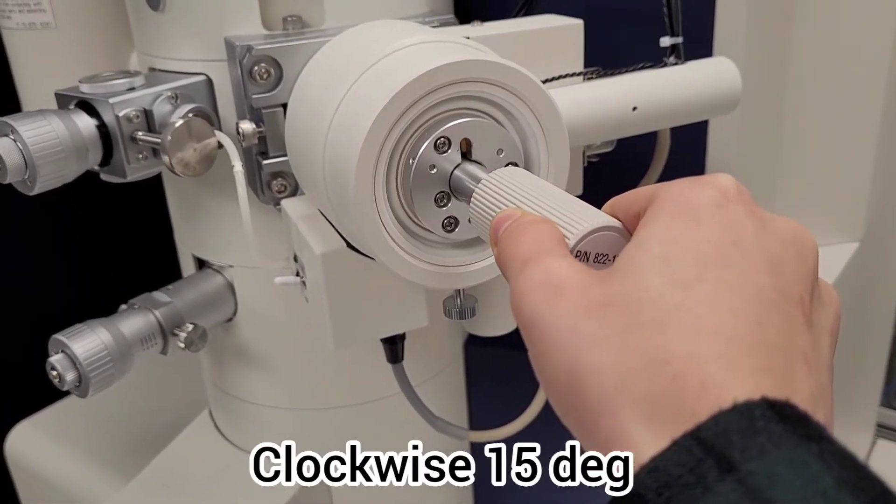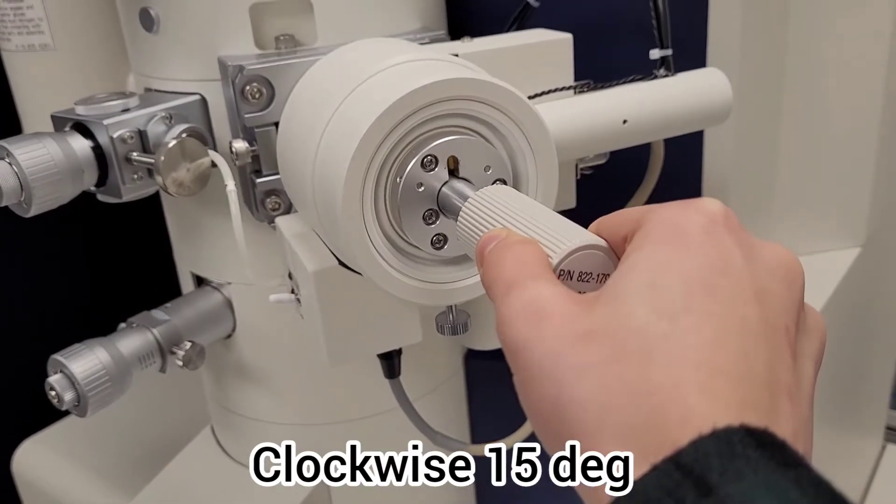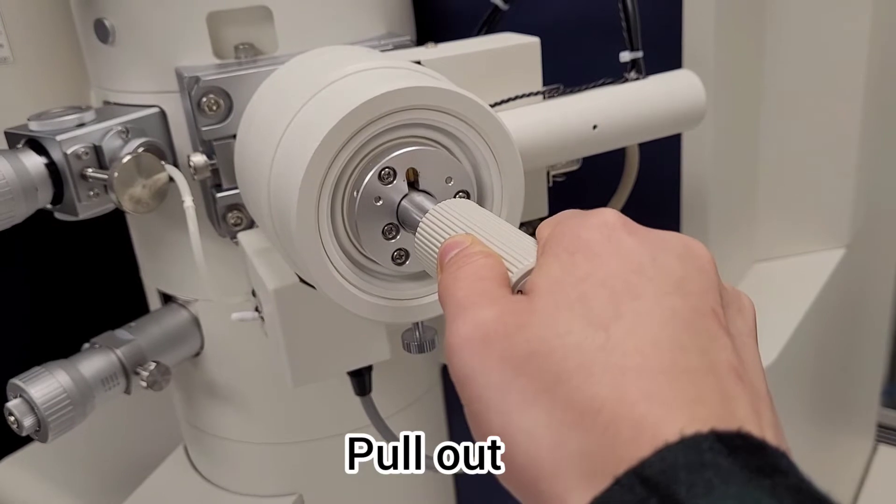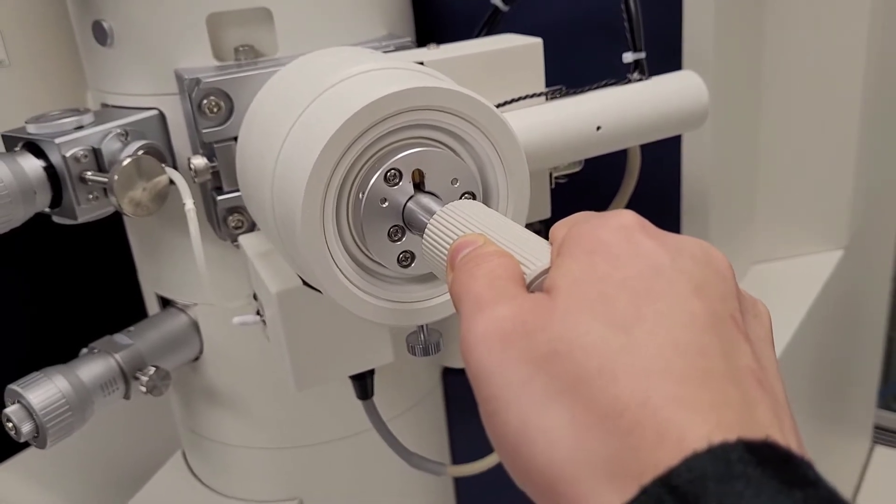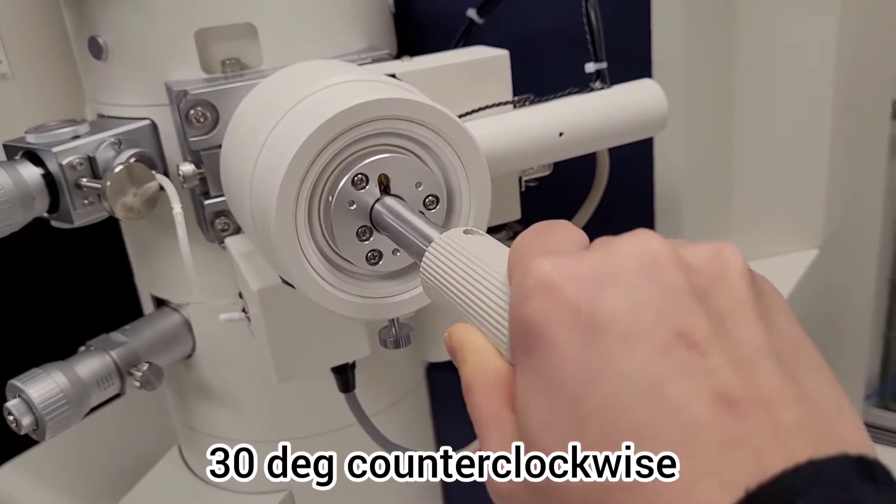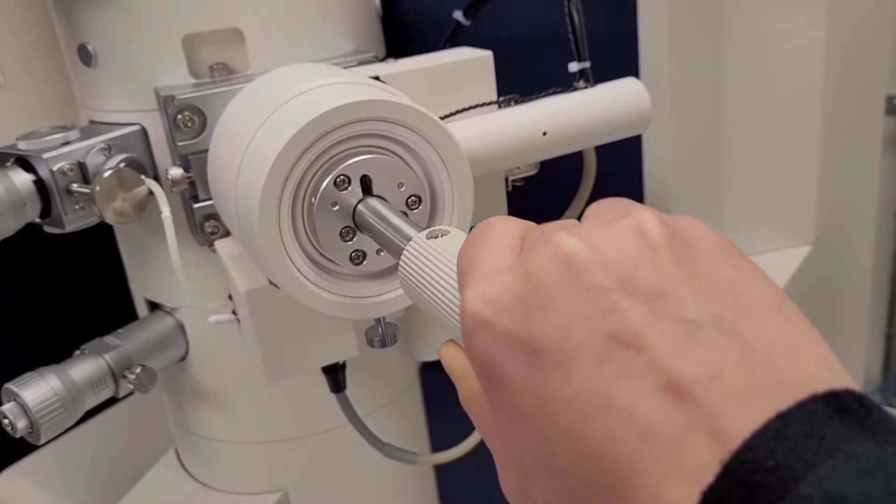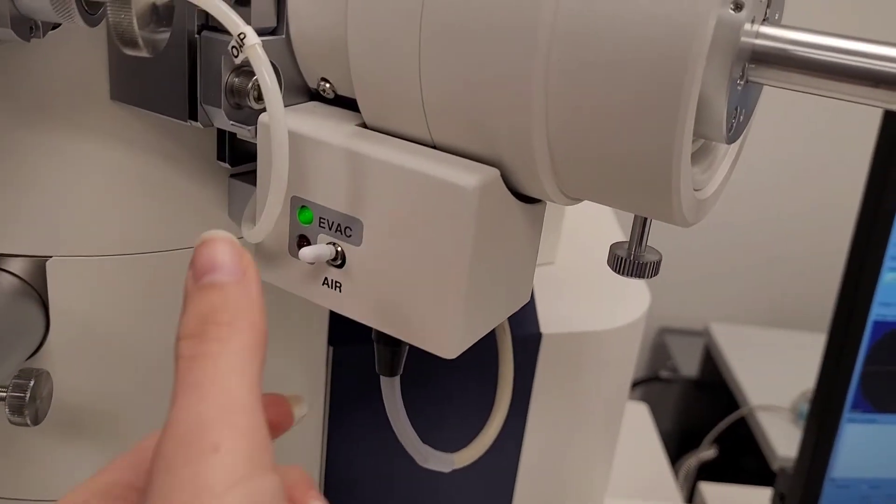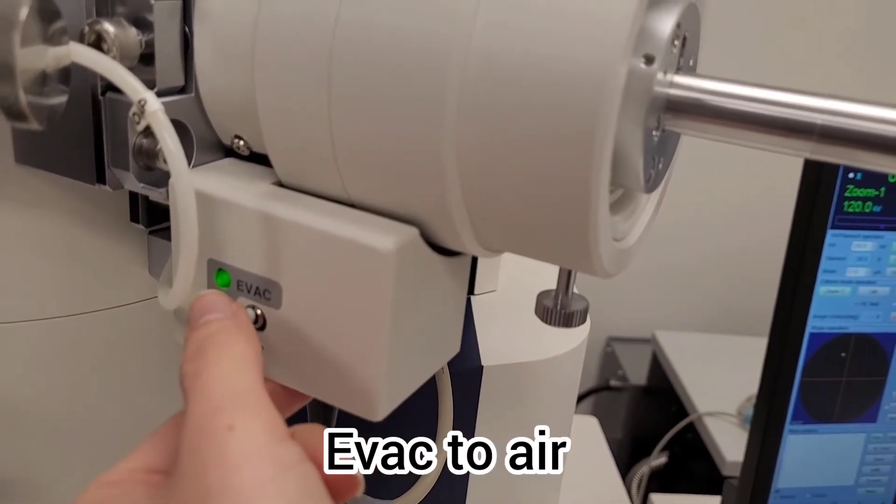Turn it clockwise 15 degrees, then pull it out again, and then turn it counterclockwise by 30 degrees. Pull out the probe again until it stops. Then set the EVAC switch to air.